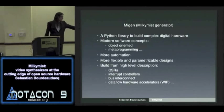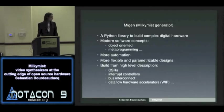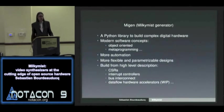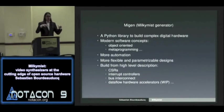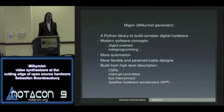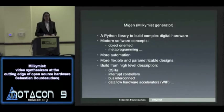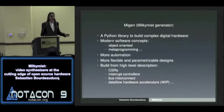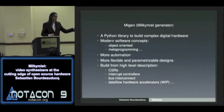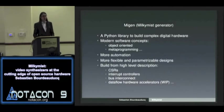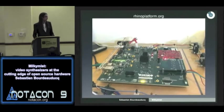Another area we're working on in Migen is the synthesis of dataflow systems. A dataflow system is basically a graph of actors, where each actor performs an operation — multiplication, memory access, or anything more complex. You give Migen a dataflow description of an algorithm and it will automatically generate a hardware implementation. That's work in progress right now — there is code that does it but it doesn't work well yet. It's more like blue-skies research today.